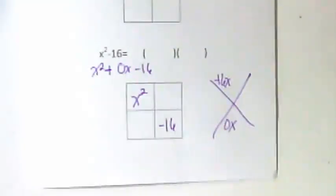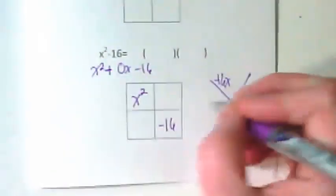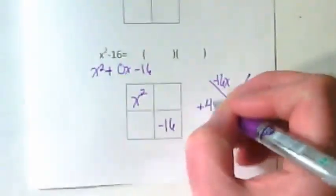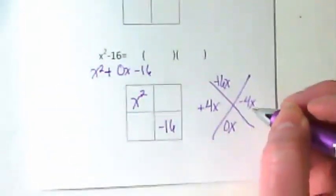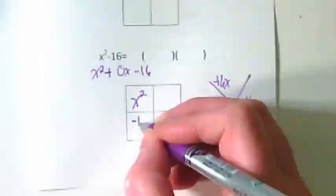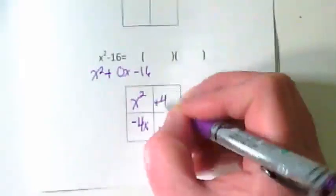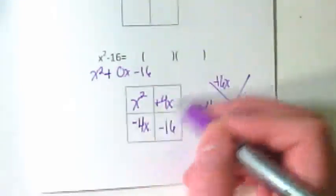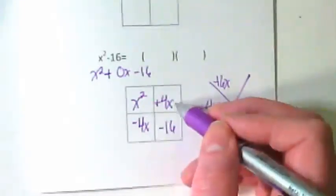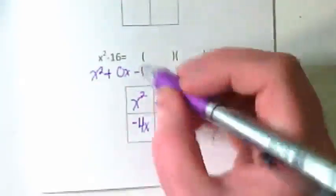What are two things that when I multiply them, I get negative 16, but when I add them, I get 0? Which kind of 4s? One positive, one negative. If I make this negative 4x and this positive 4x, do those two zero out? So then I just need to fill out the outside.